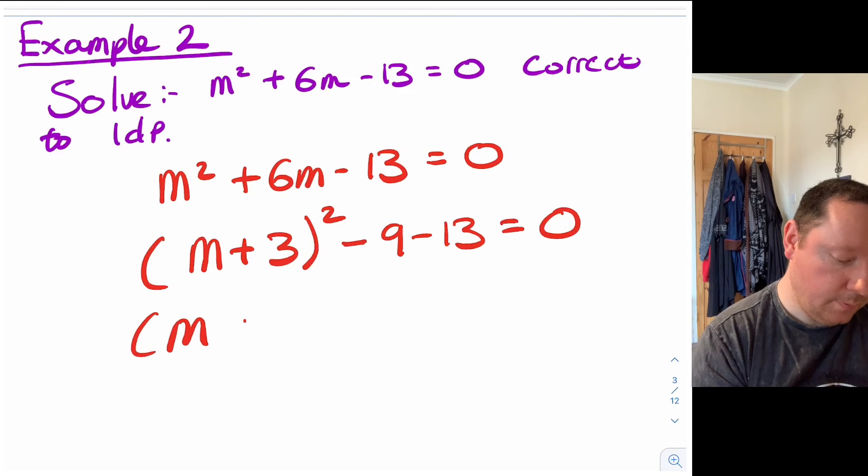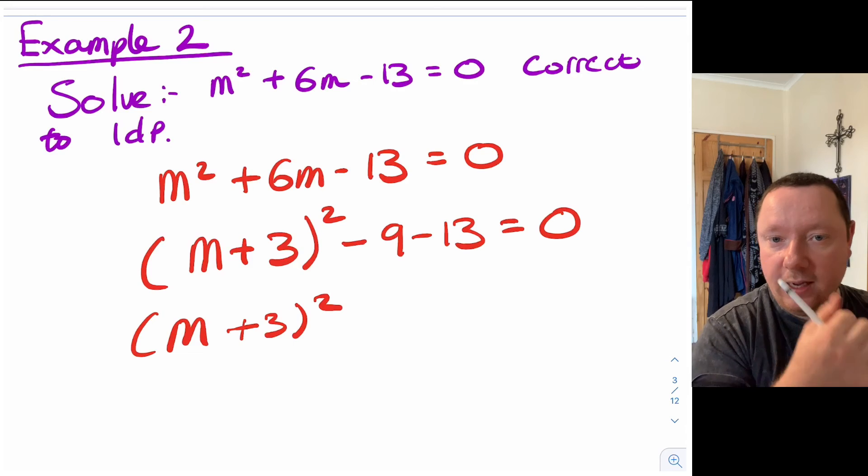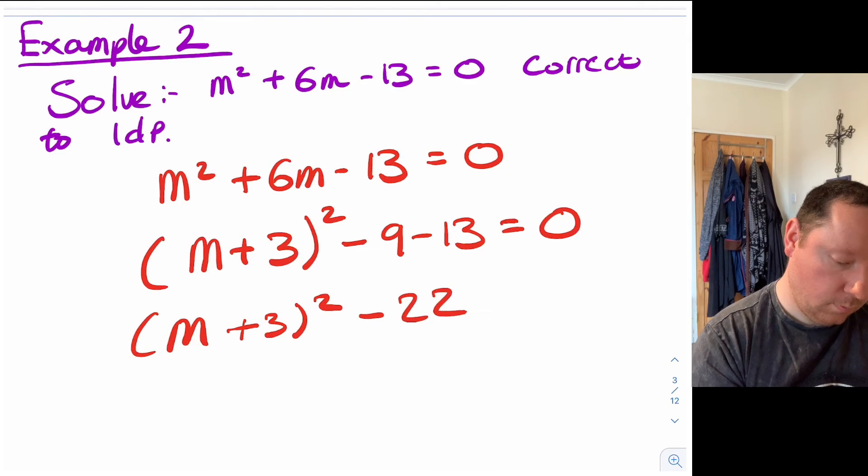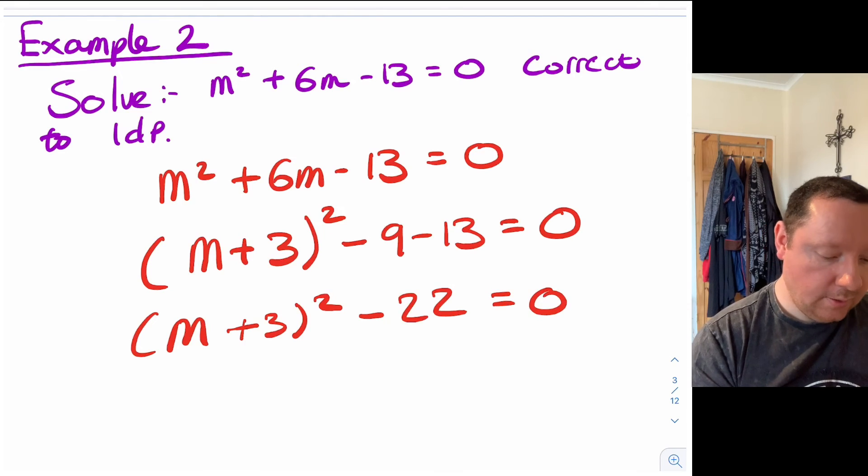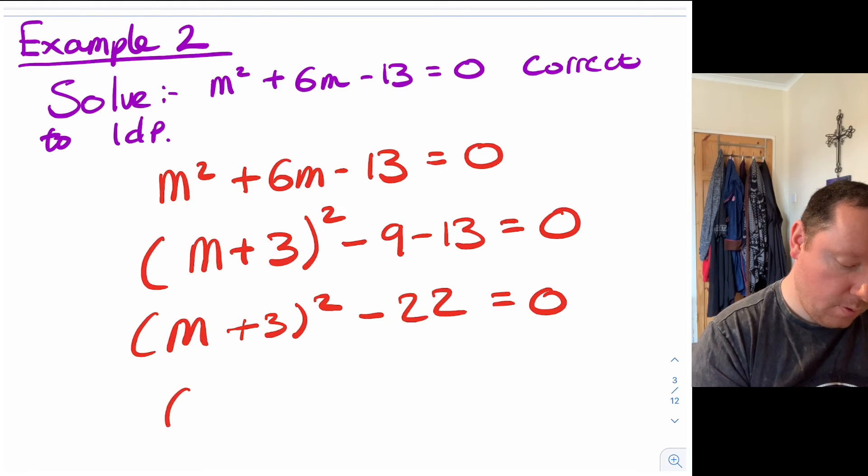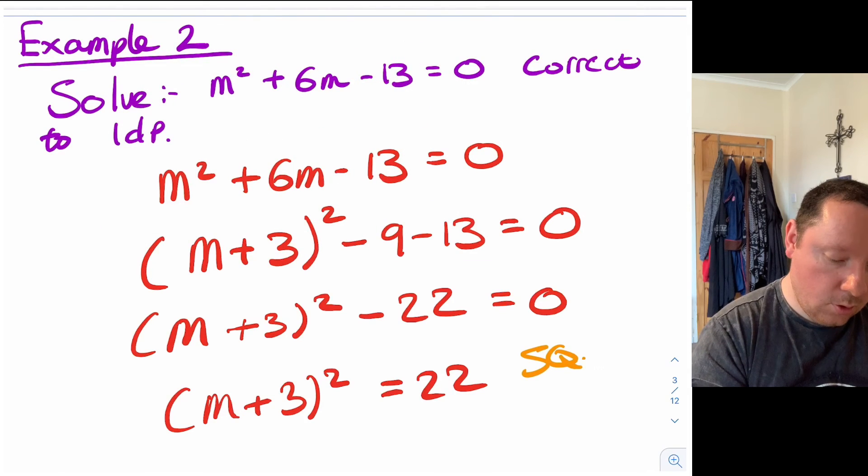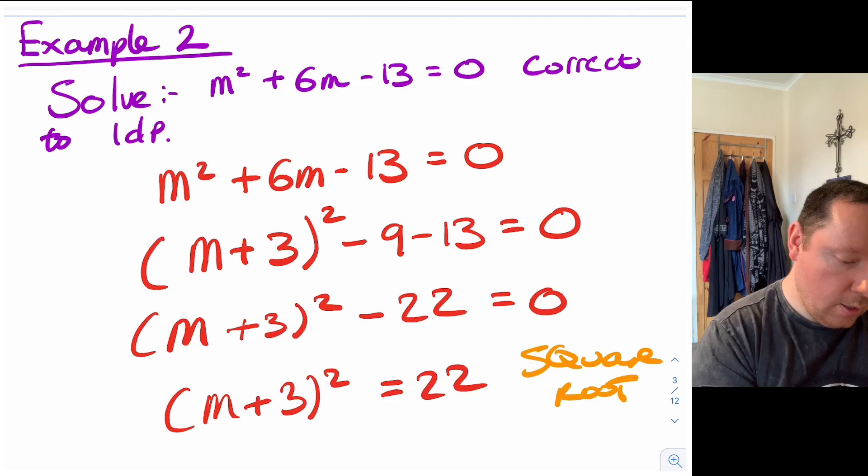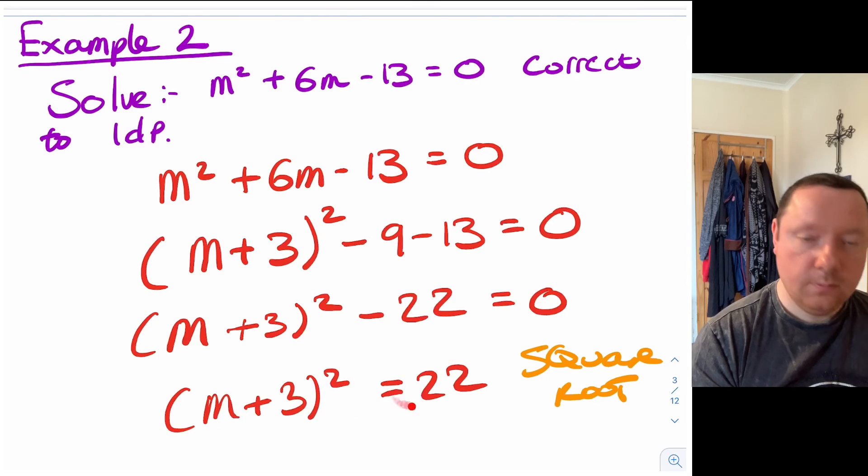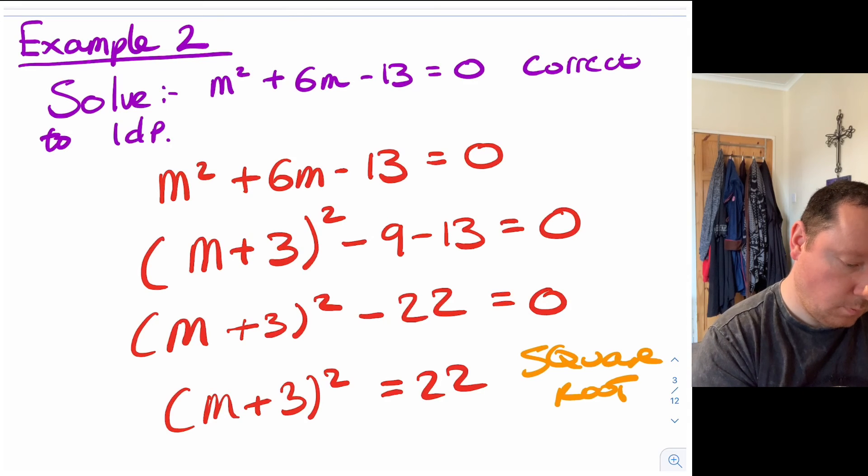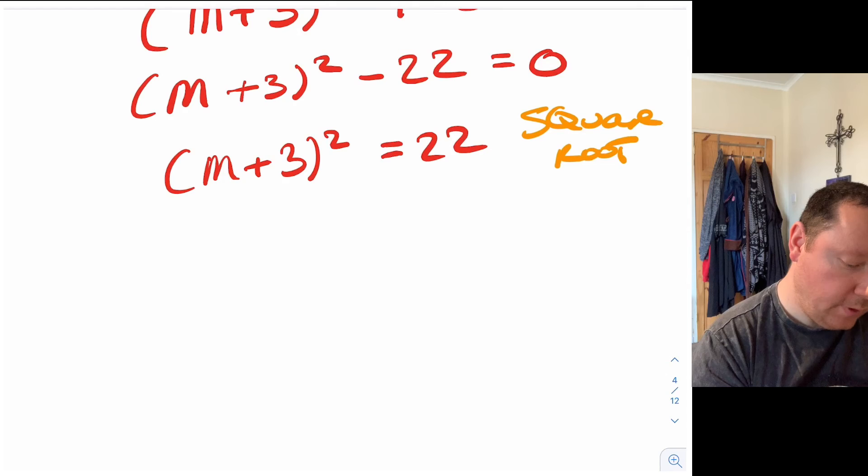So that gives us m add 3 squared minus 9 take away 13 is minus 22. So we move the 22 across to get positive 22 instead of minus. So we get m plus 3 squared equals 22. And remember at this point this is where we're going to square root. Always once you get to bracket squared equals number. Not before. So square rooting the left hand side we get m add 3 just taking away the squared equals the square root of 22.